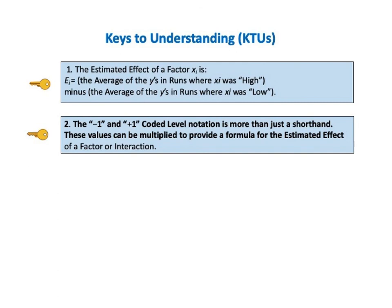KTU number 2 says, The negative 1 and plus 1 coded level notation is more than just a shorthand. These values can be multiplied to provide a formula for the estimated effect of a factor or an interaction between factors.